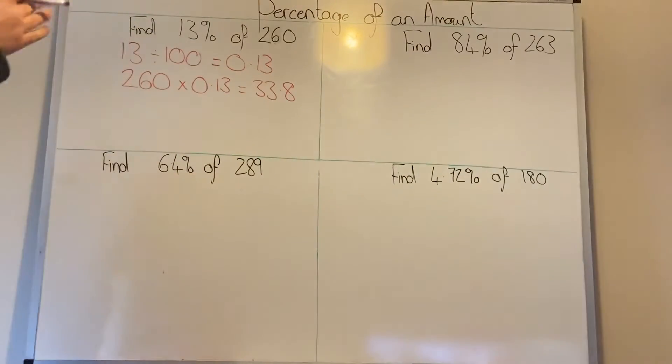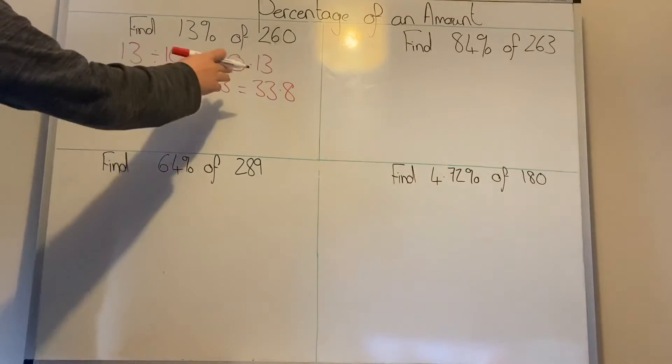Now in this there's no units, so it could say 260 pounds or 260 grams. If it does say something like that, you need to make sure that you get the correct units as well. If it's money you should have two decimal places.